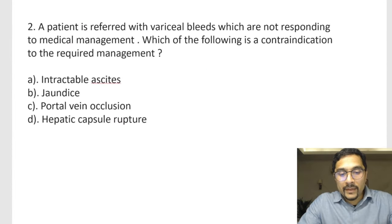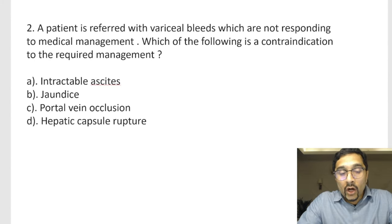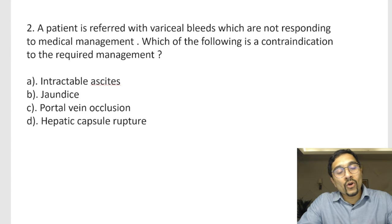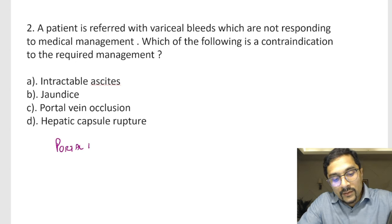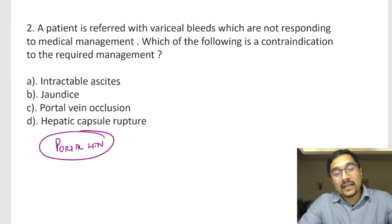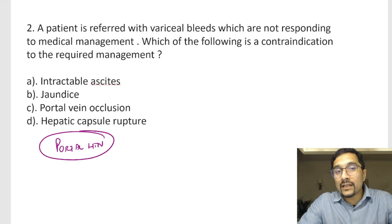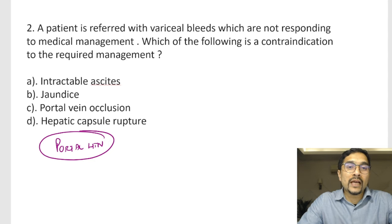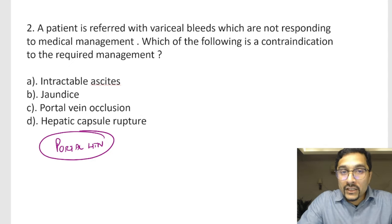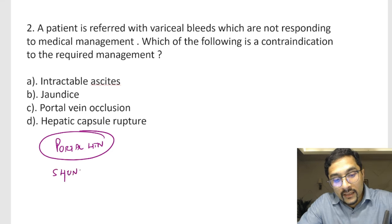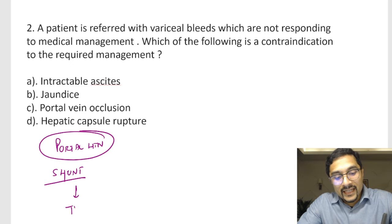The second question: a patient is referred with variceal bleed not responding to medical management. Which of the following is a contraindication to the required management? Variceal bleeds are seen in portal hypertension — patients can develop esophageal varices and upper GI hemorrhage. We first try medical management, then banding and sclerotherapy. If two trials of endoscopic management fail, we need to decrease portal pressure by carrying out a shunt.